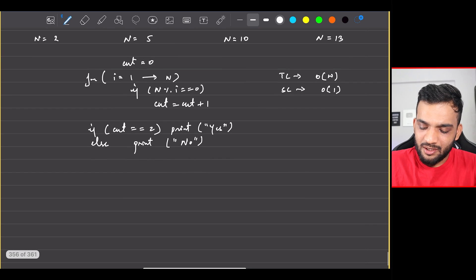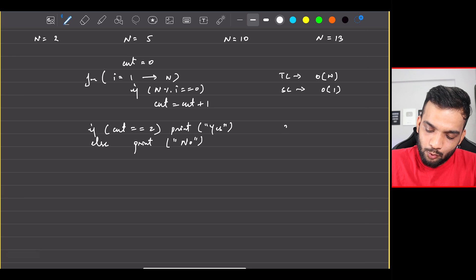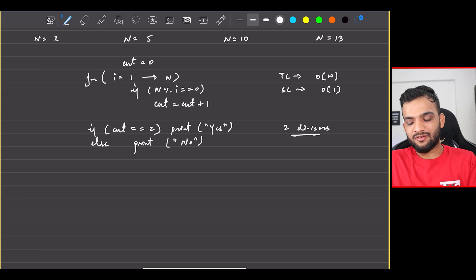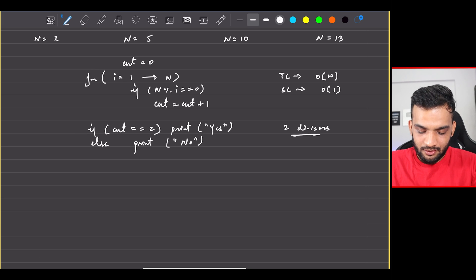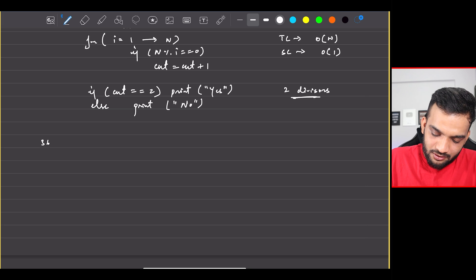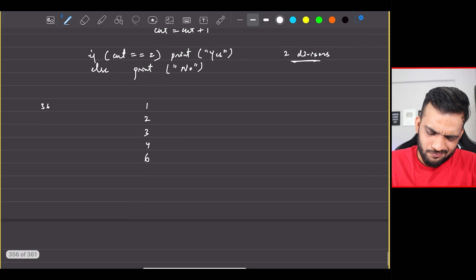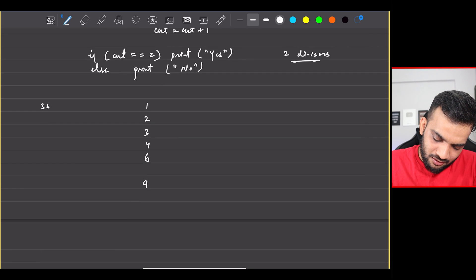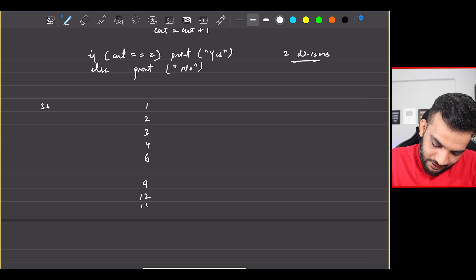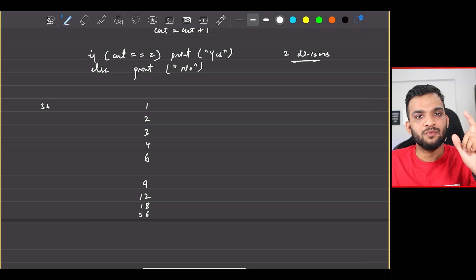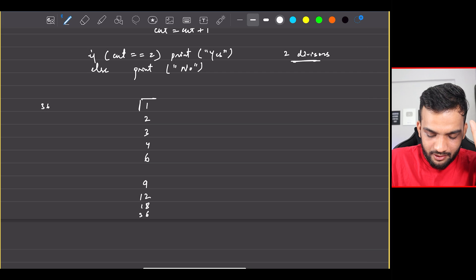When I'm saying the number has exactly two divisors, that's what I'm saying. We did a previous problem which was printing all the divisors of a number. Whenever I write something as 36, the divisors are 1, 2, 3, 4, 6, and the next are probably 9, 12, 18, 36.